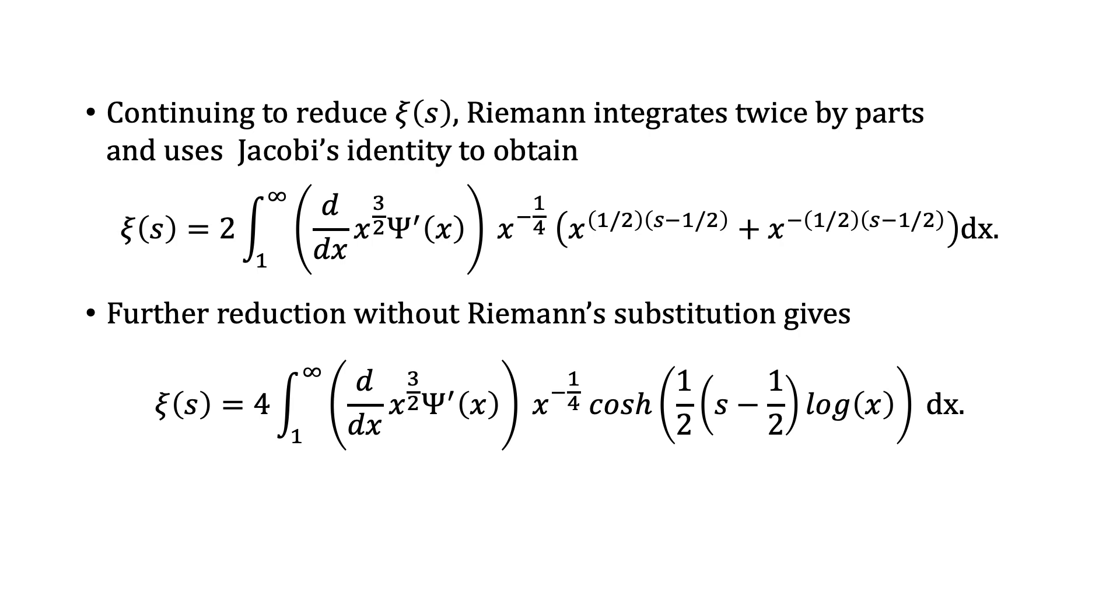Further reduction without Riemann's substitution gives the following for ξ(s). This result for ξ(s) is identical to that obtained by Edwards.